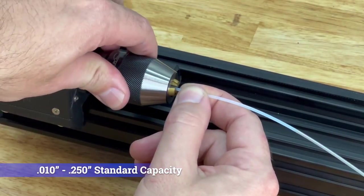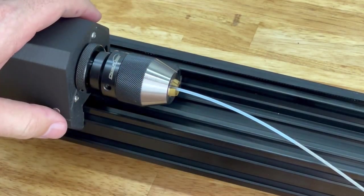Mandrels up to 1/4 inch and 200 cm long can be used, but larger custom chucks are available too.